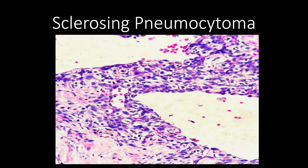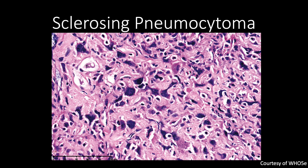In this case, it looks like there's more clearing. And this is another example of a sclerosing pneumocytoma. You can see these large cells that catch your eye with a high N:C ratio — these are multinucleate giant cells, and they're formed from the fusion of the surface cells.